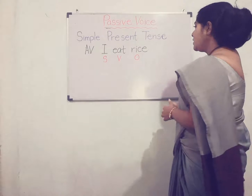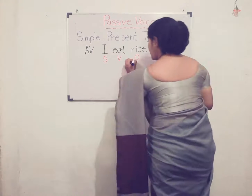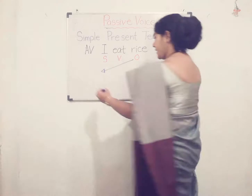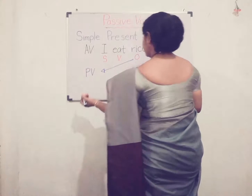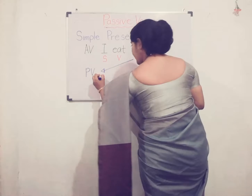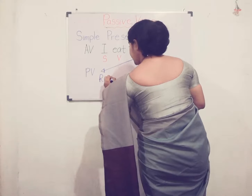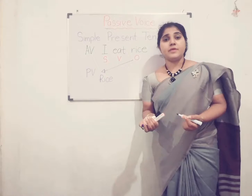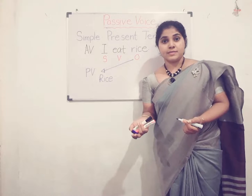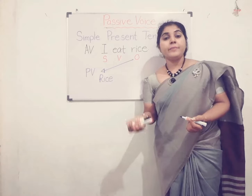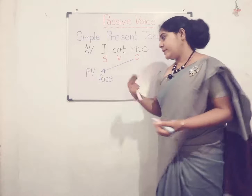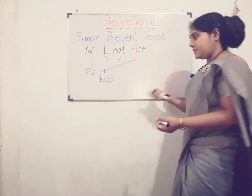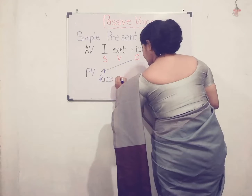Here you have to take the object as the subject in a passive voice sentence. So let's take 'rice' as the subject. Then you have to use the B verbs — the present form of B verbs. Those are am, is, are. The relevant B verb for the subject 'rice' is 'is'. So we get: 'Rice is...'